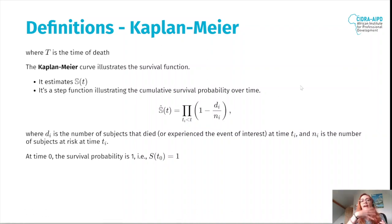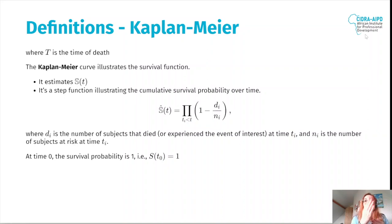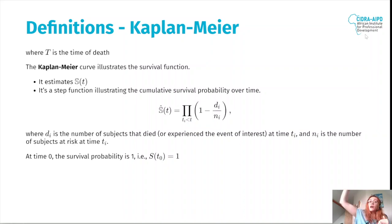This is how we estimate the survival function. It has this product of one minus G, where G is the number of subjects that died or experienced the event of interest at that particular time Ti, and N is the number of subjects at risk at that time. At time zero, the survival probability is one — because the event hasn't happened yet and everyone is alive. This probability is cumulative, so it keeps going down. The Kaplan-Meier never goes up, it always goes down.